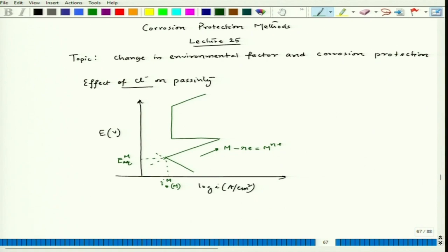If we go back to earlier lectures you would see why passivation happens and what is the mechanism for passivation. Once it reaches a particular current density — we call it i_critical or i_crit — larger the i_critical, the more difficult it is to achieve passivity for that metal. Once we cross i_critical, immediately the oxide forming on top of that metal will cover the entire surface and achieve passivity.